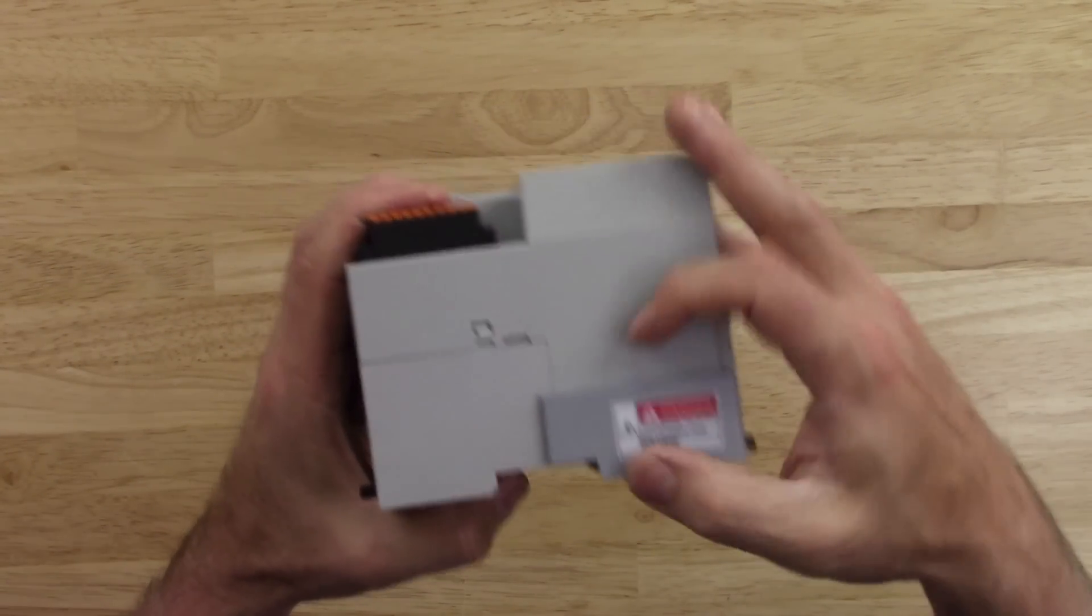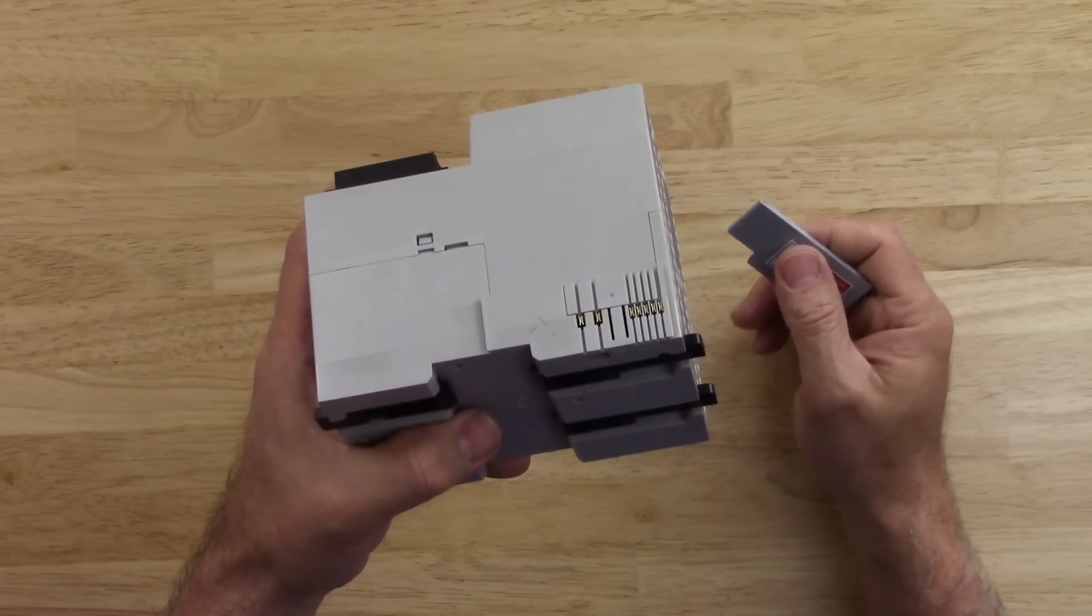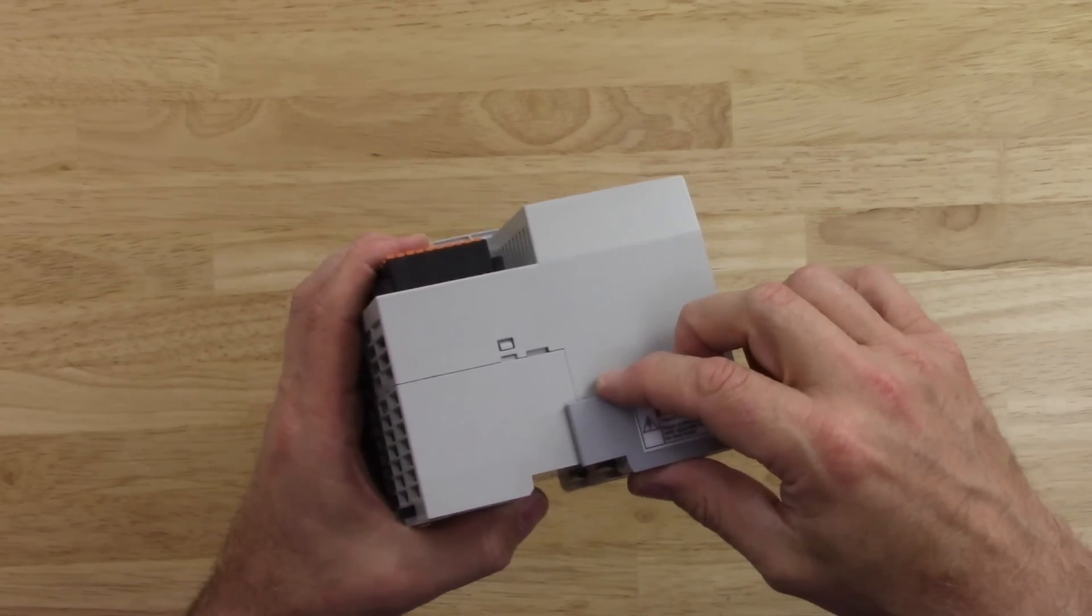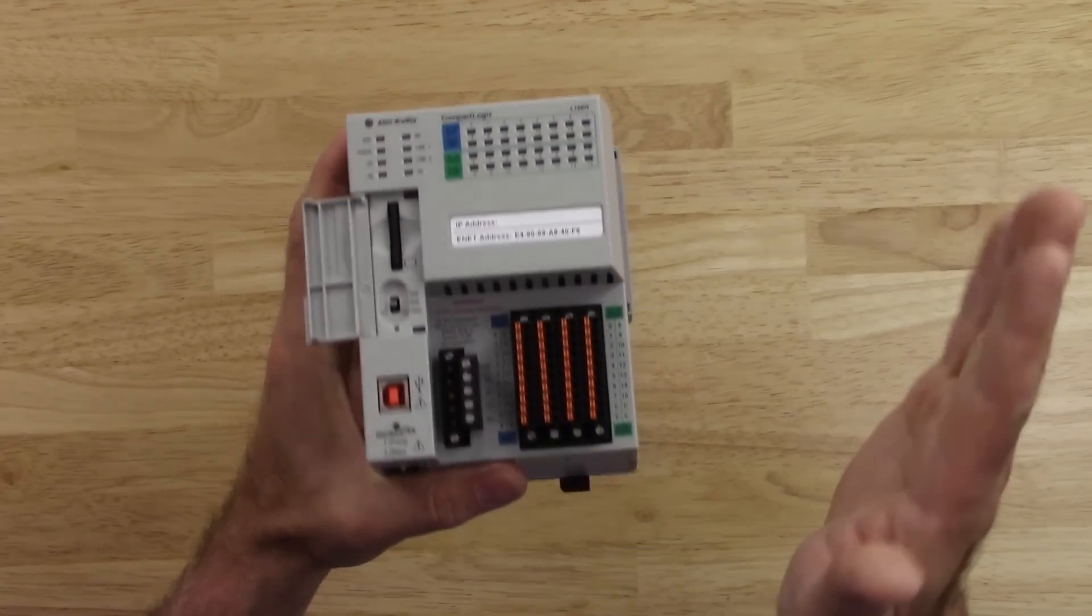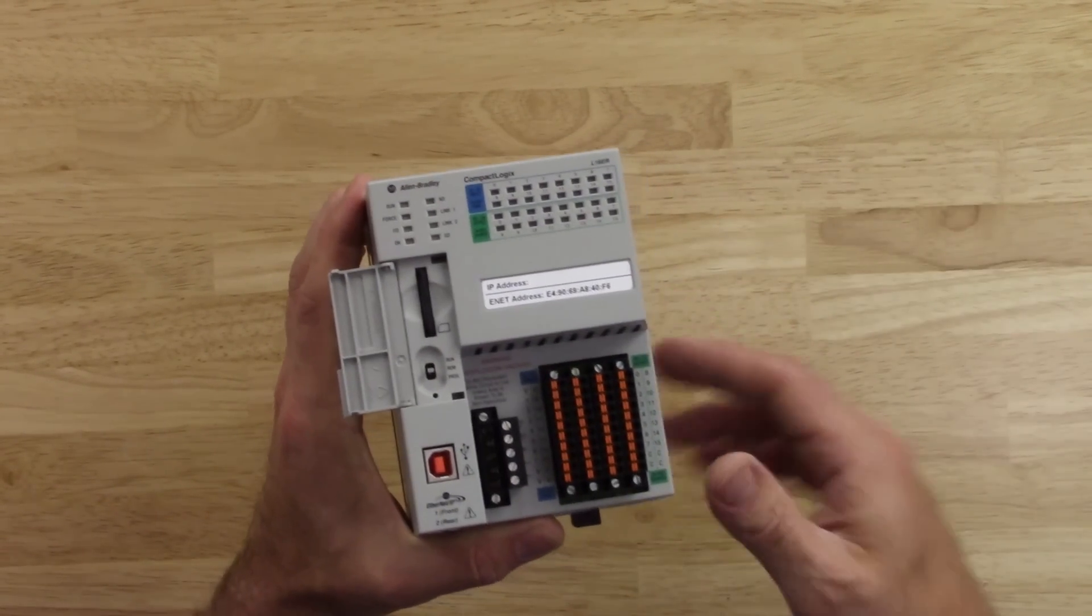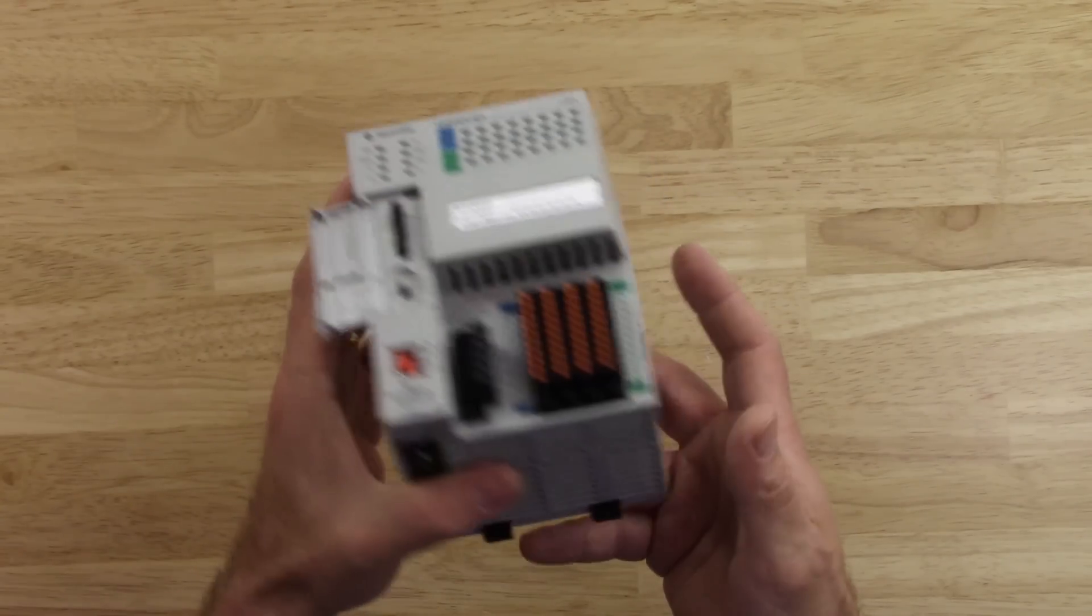Okay, let's look at the side here, the right side. We have the cover for the point I.O. Because this is an L1, it uses a point I.O. local expansion. This particular model, I believe, can take up to six cards, where the L18 can take up to eight cards.